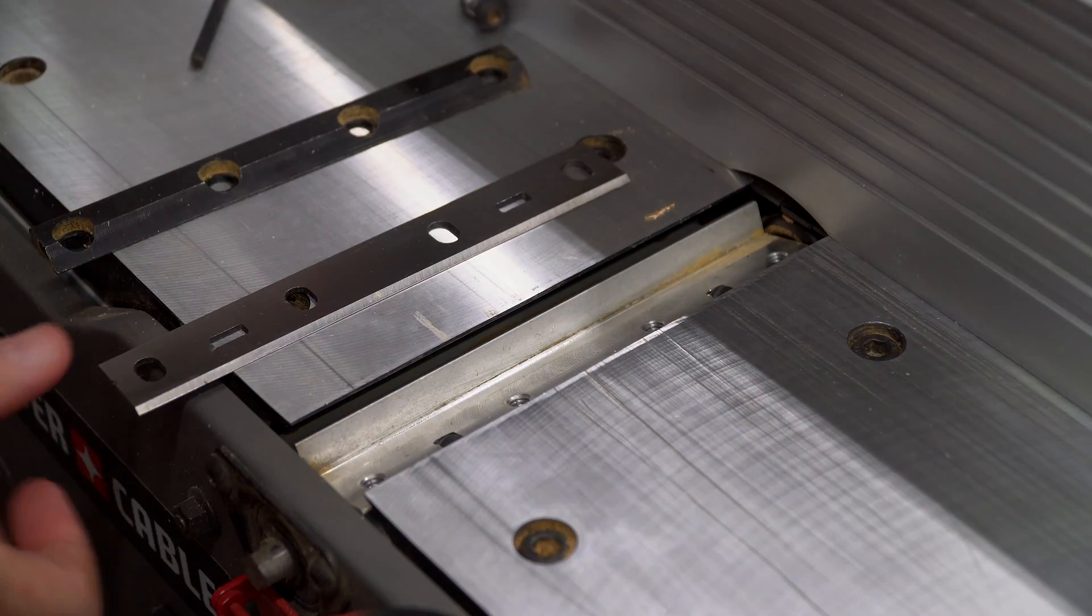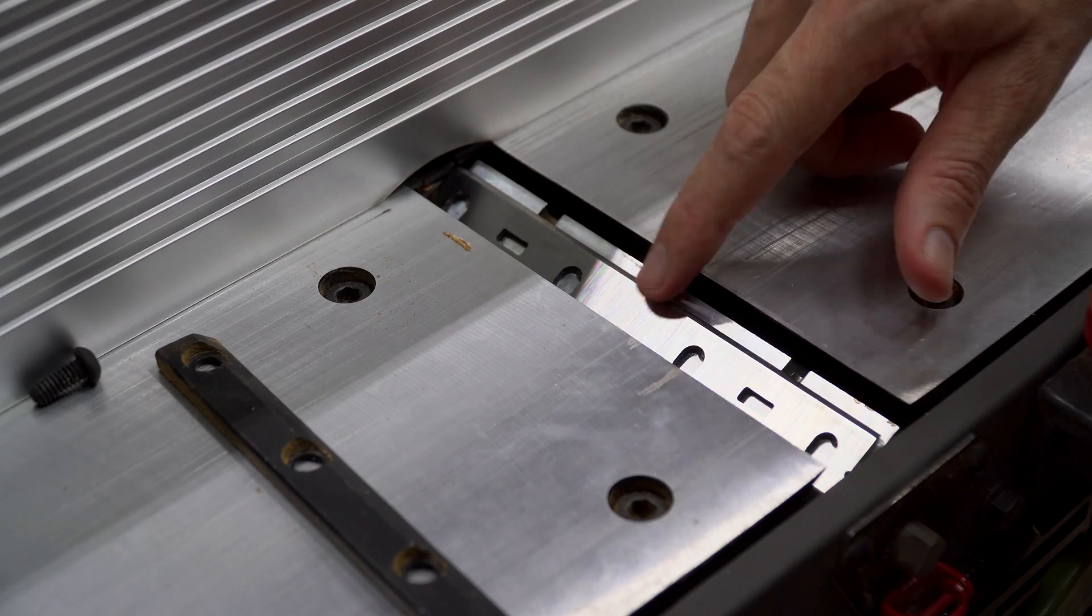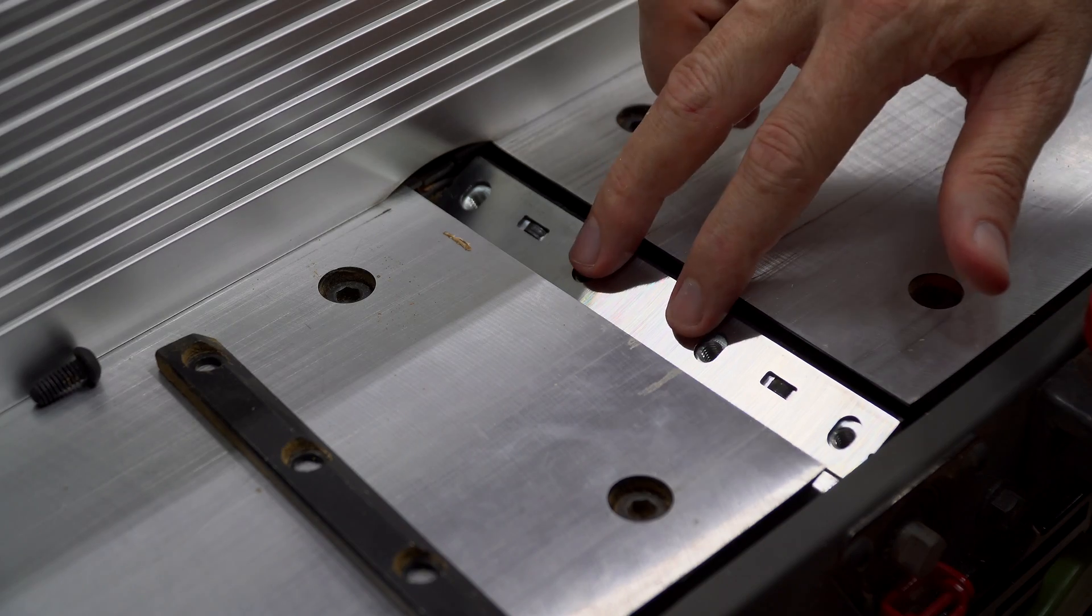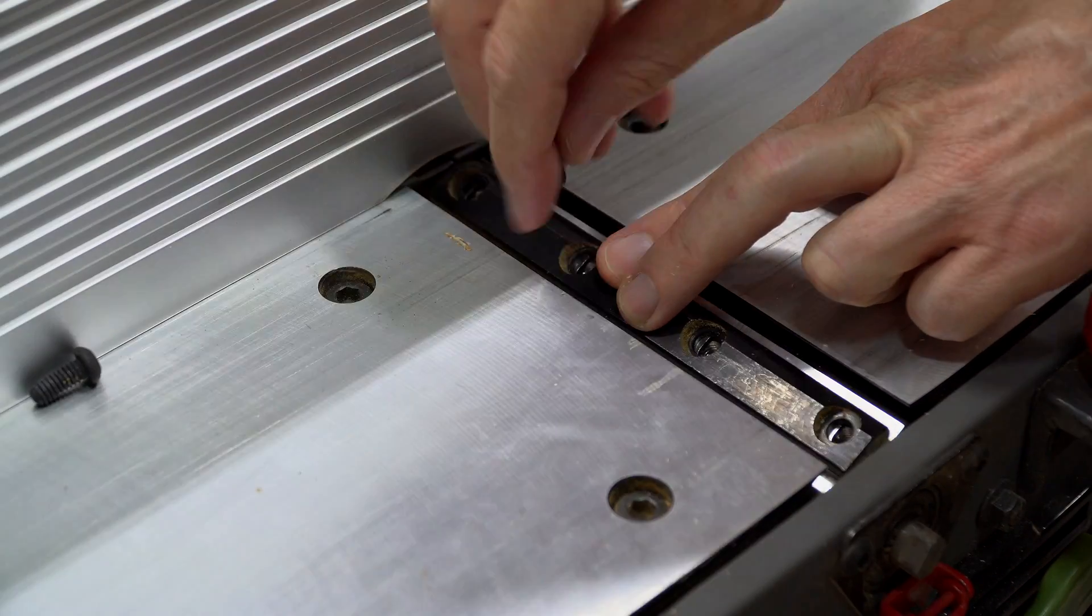To replace the blade, drop it back into the same position in the cutter head. You may need to slide the blade so that the holes align with the screw holes. Then place the clamping plate back over the blade, and add the screws back in.